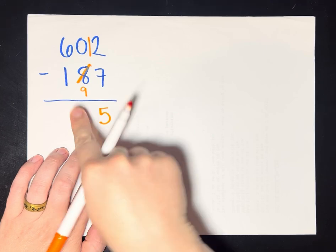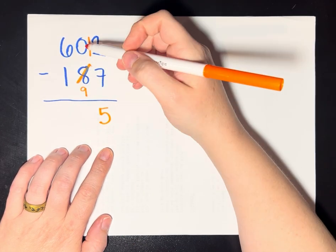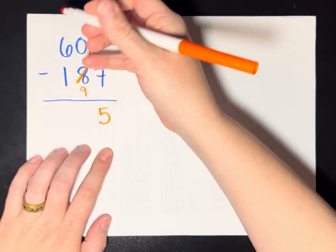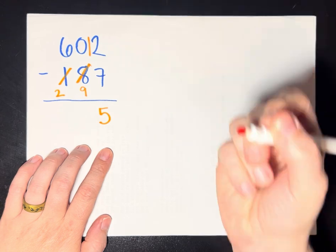And now I move on to my next place value. I'm going to try to take 9 away from 0, and I can't do that, so I'm going to borrow again. But again, I'm going to borrow from the bottom column. So this number goes up by 1, so 1 becomes a 2.